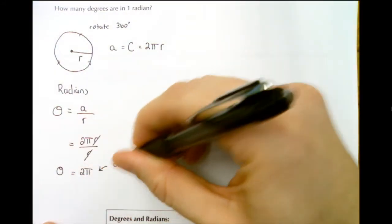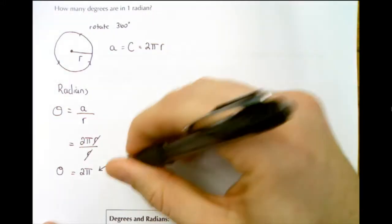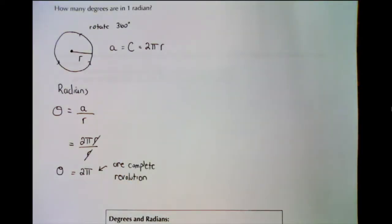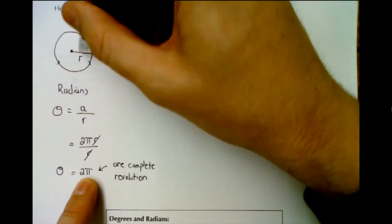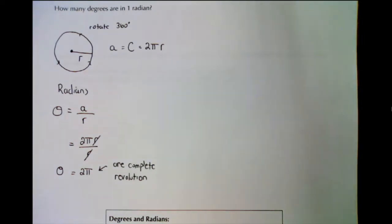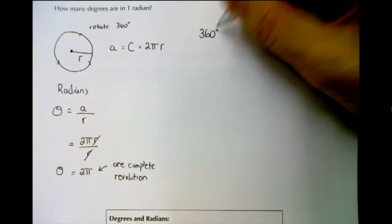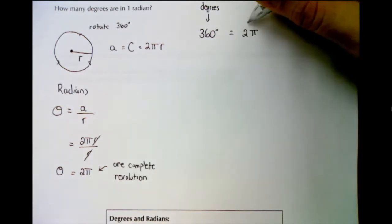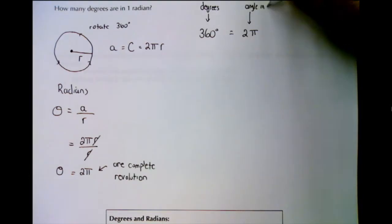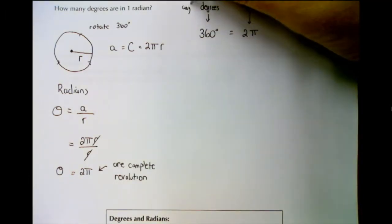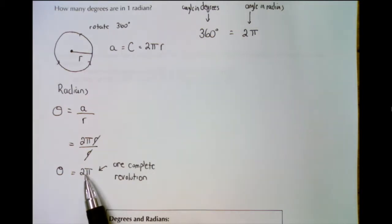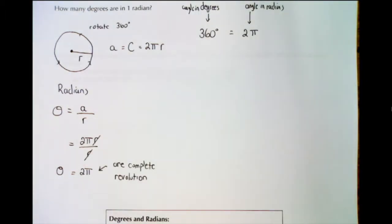One complete revolution in degrees is 360°, but in radians we covered 2π. So our relationship is: 360 degrees equals 2π radians. In radians we covered 2π, which is approximately 6.28, but we leave it as 2π.